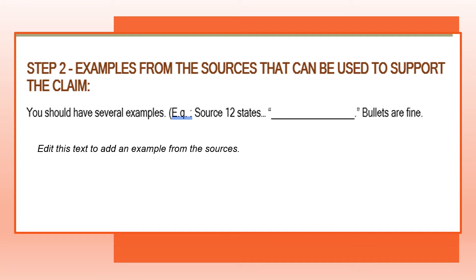You have to say like, 'Source 4 because it shows blah blah blah.' That's why you should have several examples — for example, 'Source 12 states...' and then fill in the blank. You cannot just write the source number.